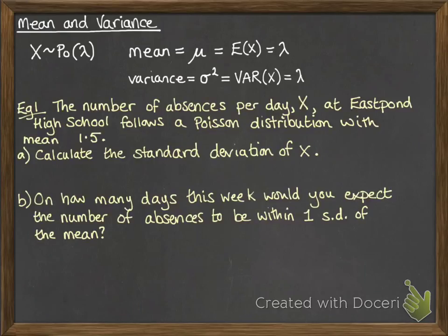So example number one. The number of absences per day X at East Pond High School follows a Poisson distribution with mean of 1.5. So they get on average 1.5 absences per day.